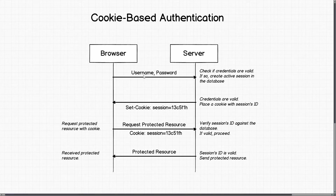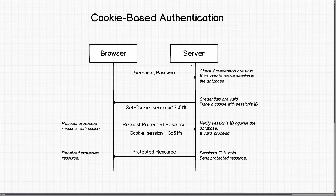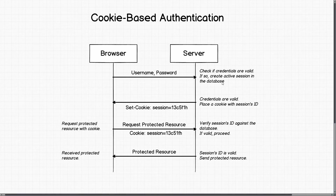This diagram will be pretty similar to the one shown in the last video, but with a few changes. Cookie-based authentication works like this: the browser on the left sends a set of credentials to the server on the right. The server checks whether those credentials are valid, and if so, creates an active session in the database. It then places a cookie on the browser with the session ID that matches the active session in the database.